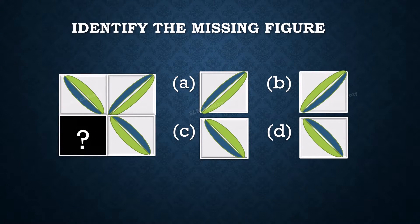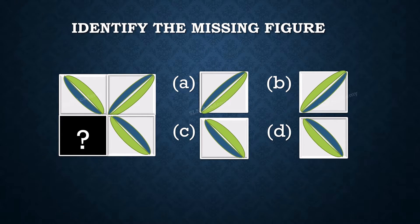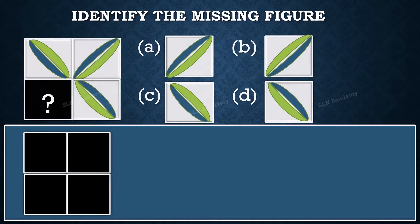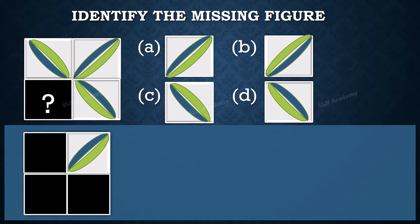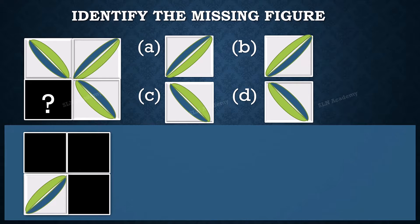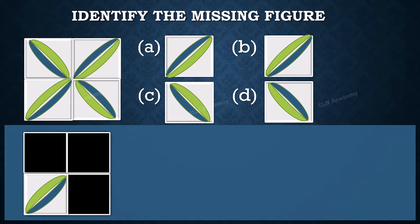Number 5. Identify the missing figure. You can pause the video here and solve the problem, or you can continue for the explanation. Let us first observe how shapes are changed. The picture is turning in a clockwise direction, so the answer is option B.